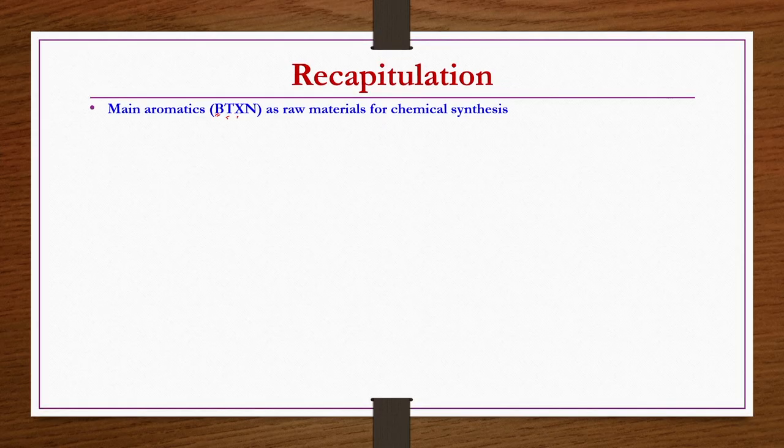First, we have a recapitulation of what we discussed in the previous lecture of this chapter on chemicals from aromatics. We started by listing out the main aromatics used as raw materials for production of different synthetic chemicals: benzene, toluene, xylene, and naphthalene are the important aromatics from which we can produce a number of different types of synthetic chemicals.